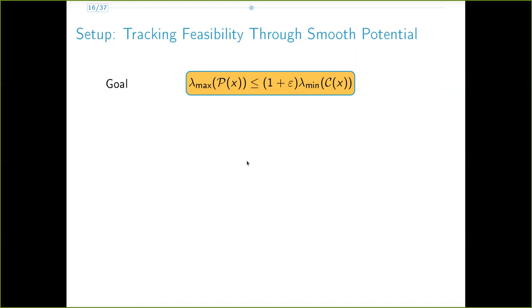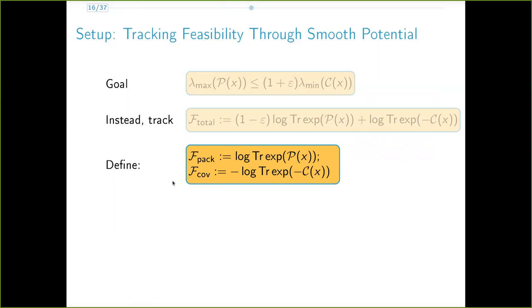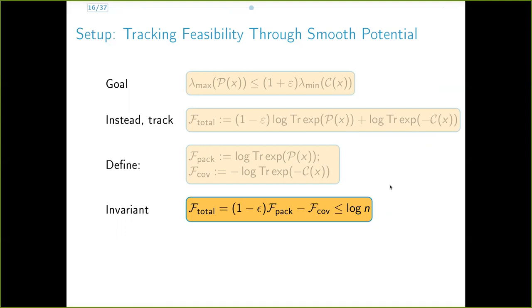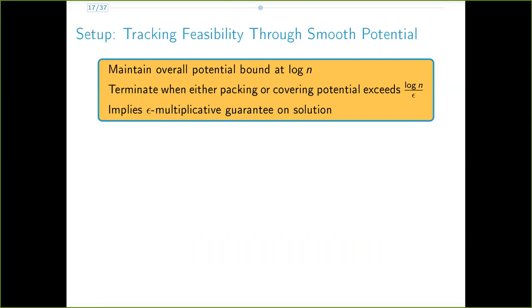To solve the decision problem involving these eigenvalues, we instead work with the potential function Ftotal, which is a smooth approximation to lambda max of Px minus lambda min of Cx. We can therefore view it as a difference of this packing potential and this covering potential. Throughout the algorithm, we ensure that the total potential Ftotal is at most log n. We terminate when either the maximum eigenvalue of Px or the minimum eigenvalue of Cx exceeds log n over epsilon. This potential invariance and termination condition together ensure the desired epsilon multiplicative accuracy of our solution.